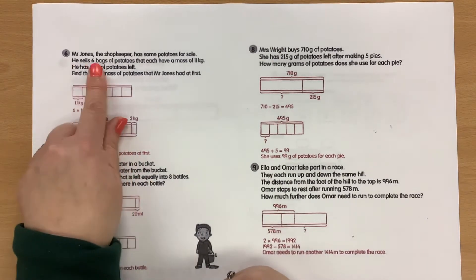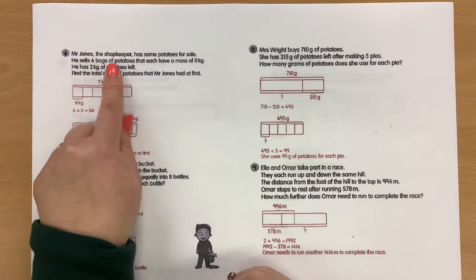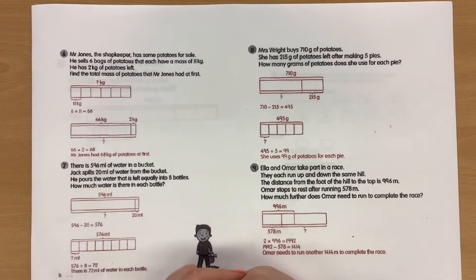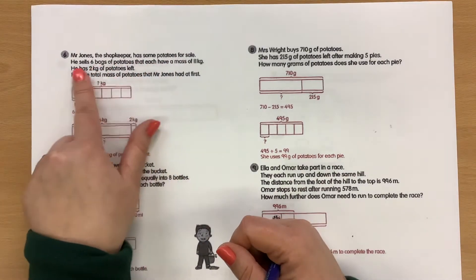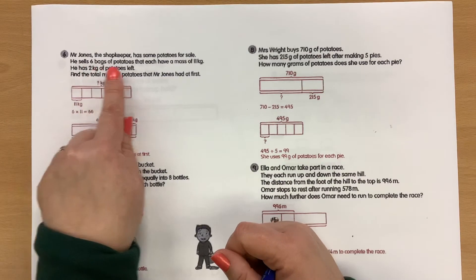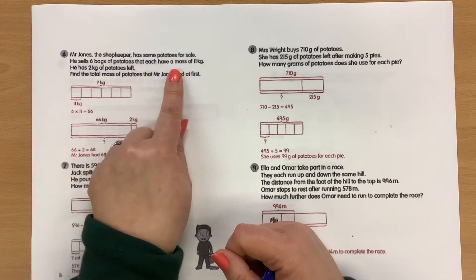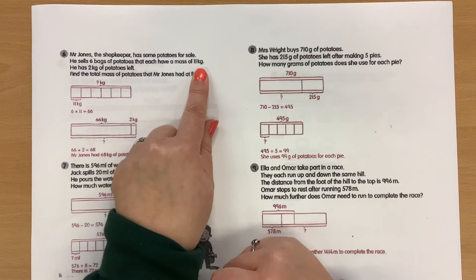So for example, in this question: Mr Jones the shopkeeper has some potatoes for sale. He sells six bags of potatoes that each have a mass of 11 kilograms. He has two kilograms of potatoes left. Find the total mass of potatoes that Mr Jones had at first. So first of all we need to use the information about what he has sold — six bags of potatoes that each have a mass of 11 kilograms.